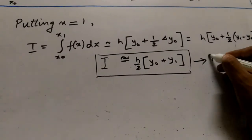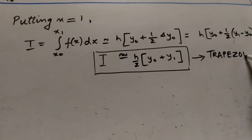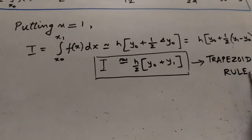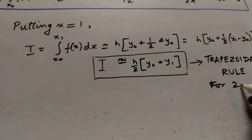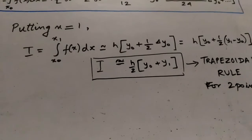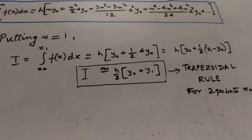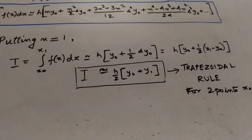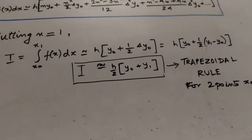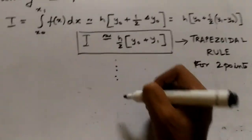This formula — I approximately equal to h/2 into (y0 + y1) — is known as the trapezoidal rule for two points x0 and x1.